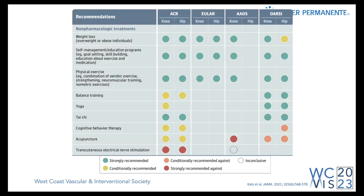Once we decide the pain is related to arthritis and see the patient in clinic, we want to make sure we've exhausted all options before offering interventional management. Looking at guideline-directed therapies across rheumatology, orthopedics, and ORSI — a dedicated osteoarthritic group — the number one recommended thing across the board is weight loss, followed by physical exercise and physical therapy. Something like Tai Chi and balance exercises are also well recommended.